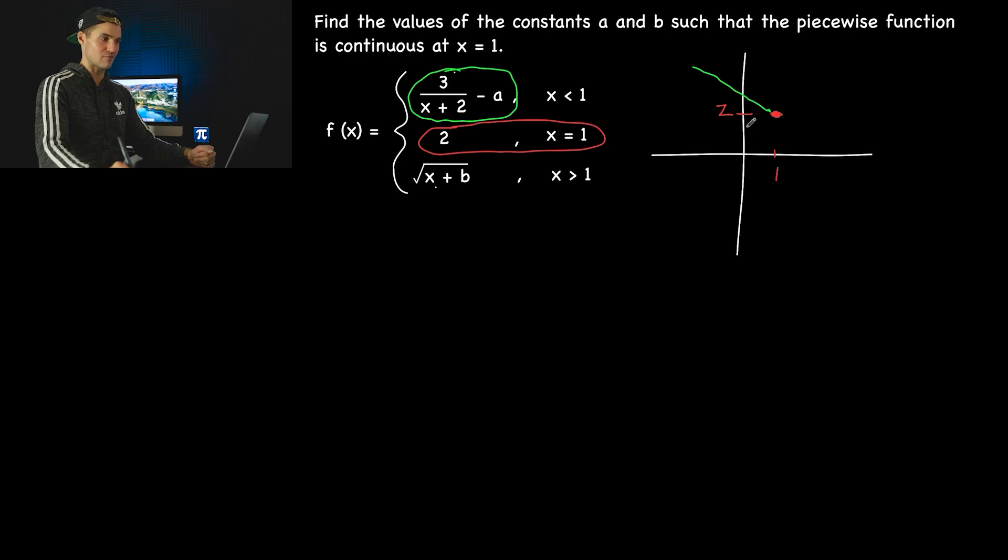So the limit as x approaches 1 from the left of 3 over (x plus 2) minus a has to equal 2. It has to approach that y value of 2.